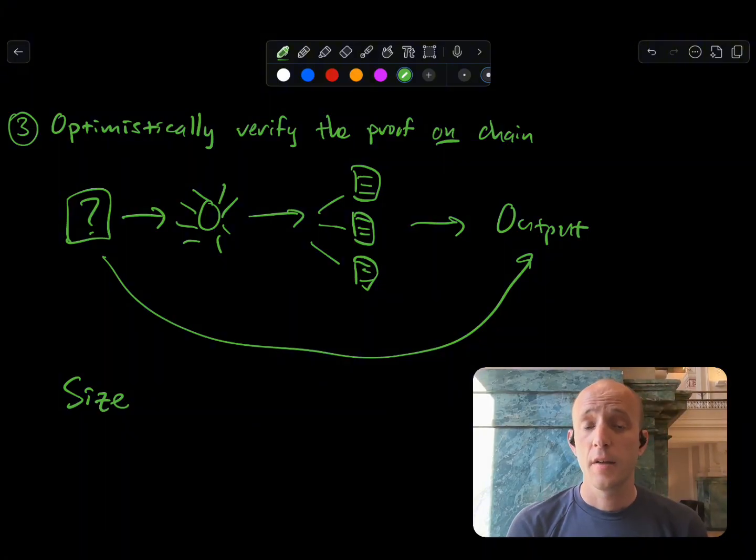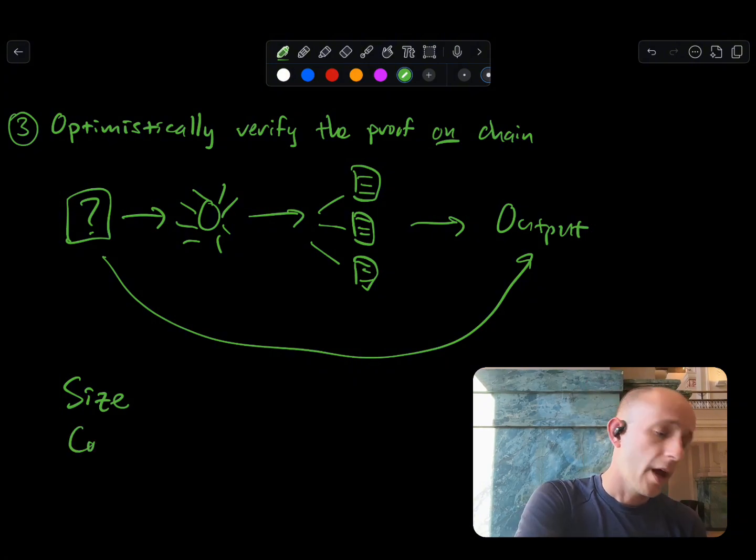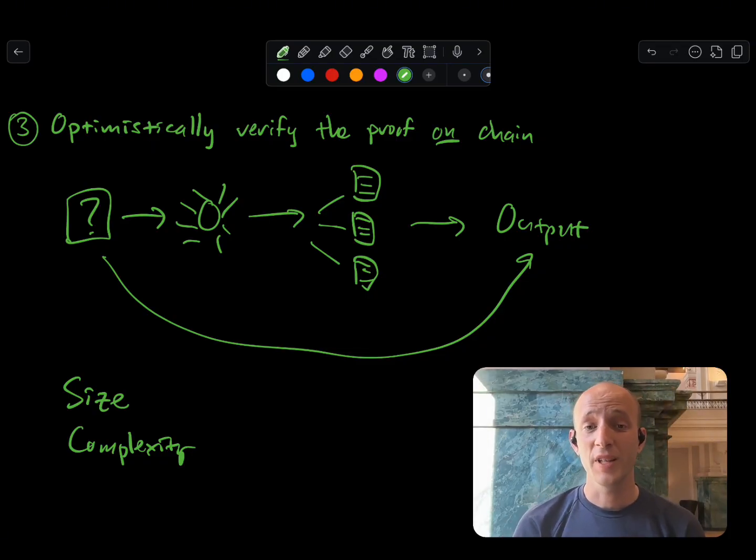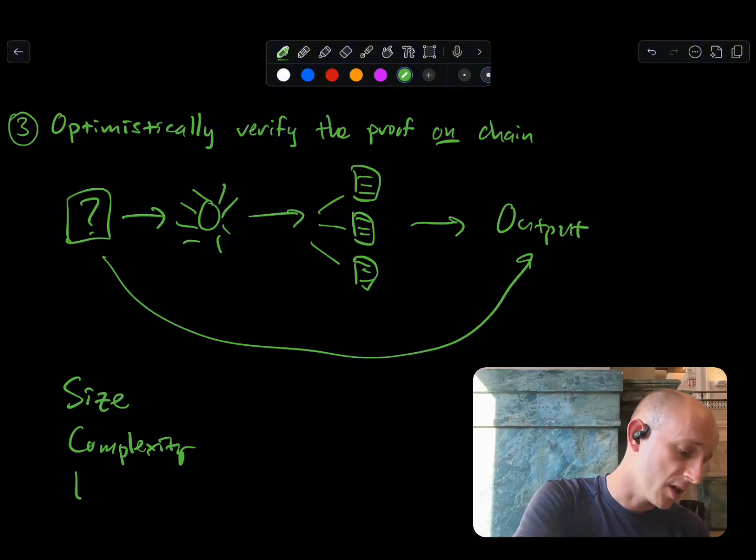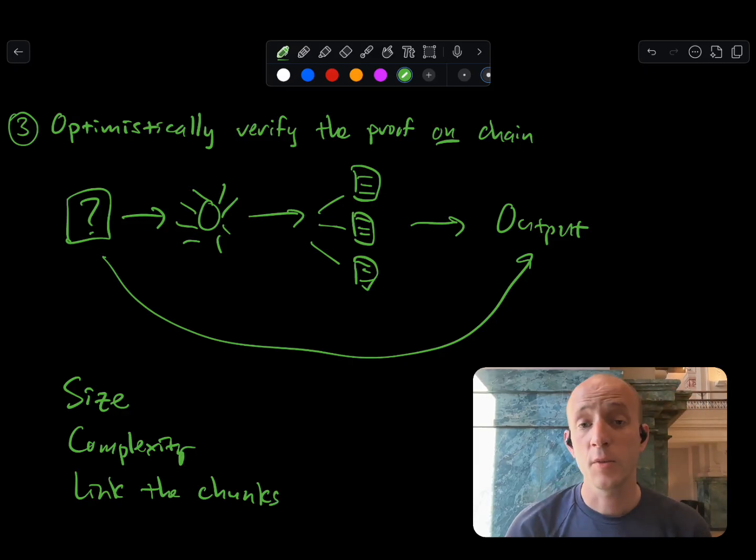One of which is size. We talked earlier about trying to do a full proof verification absolutely doesn't work on Bitcoin. The chunks that we talked about here do fit on Bitcoin, but they're still very large and can manage to be a significant chunk of a block. Another issue with this is complexity. While we can build out these chunks, it's really tricky to try to build out in Bitcoin script this kind of chunked verifier. A third way that this gets tricky is trying to link the chunks together. There's some complex cryptography and some complex Bitcoin script that goes into that. So overall, not ideal.